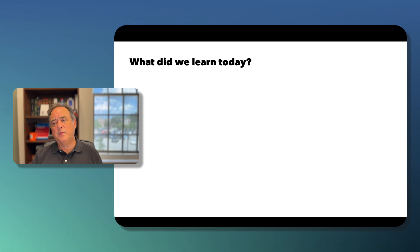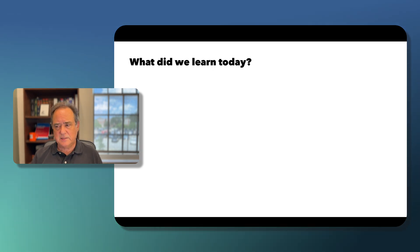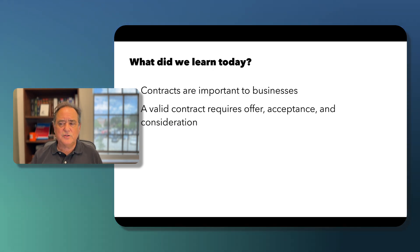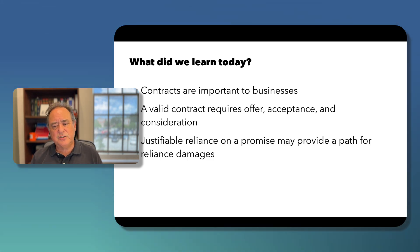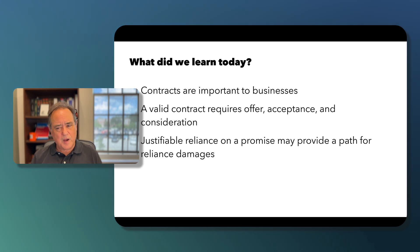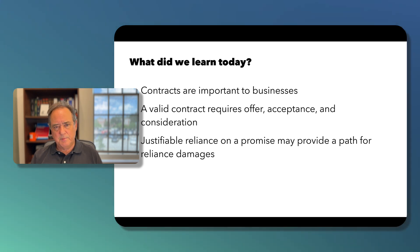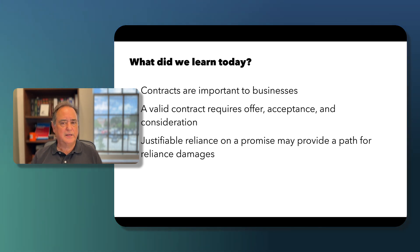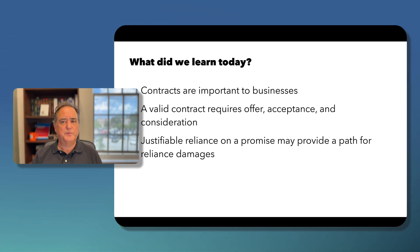In conclusion, contracts are important to businesses. A valid contract requires offer, acceptance, and consideration. Finally, justifiable reliance on a promise may provide a path for reliance damages under promissory estoppel. That's all for this lecture — if you have any questions, let me know. I'll see you next time.